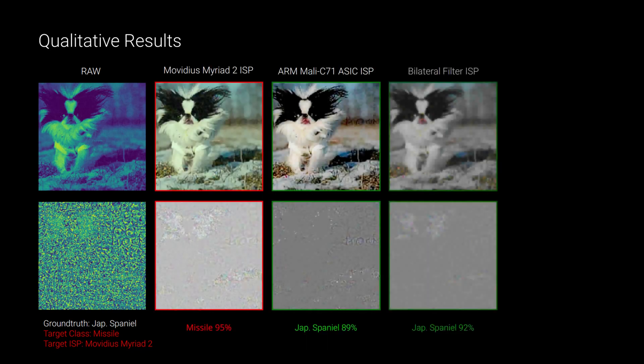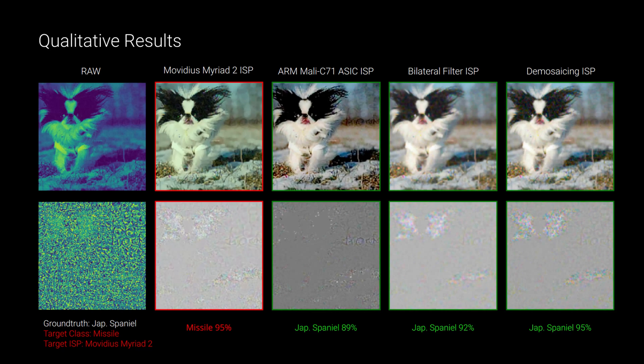Let's look at some qualitative results. Here we show the adversarial raw image at the top and the raw perturbations targeting the Movidius ISP at the bottom. For the next columns, we show the processed images and the associated RGB perturbations for each ISP.